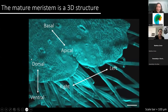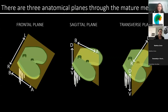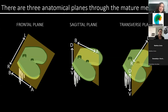Although Marcantia may look flat, it's actually composed of many cell layers in the dorsal-ventral axis. This includes dorsal structures such as air pores, and ventral structures such as rhizoids. Because the meristem is a three-dimensional structure, we need to view the meristem in multiple anatomical planes. This includes the frontal plane, which divides the dorsal and ventral sides of the plant body; the sagittal plane, which divides the left and right sides; and the transverse plane, which divides the apical and basal sides.